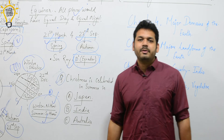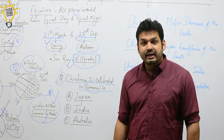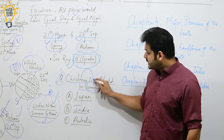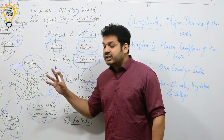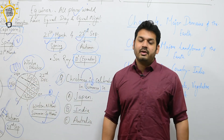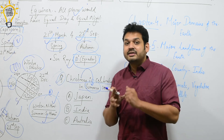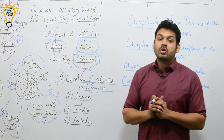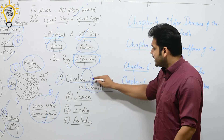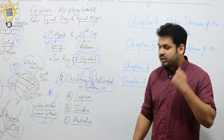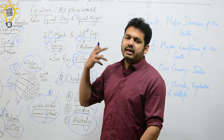There is a question in NCERT Class 6: Christmas is celebrated in December — is it summer or winter when Christmas is celebrated? Remember, on 22nd December the sun is over the Tropic of Capricorn. For the Southern Hemisphere, this means summer. So Australia, which is in the Southern Hemisphere, will have summer during Christmas. India and Japan, in the Northern Hemisphere, will have winter. The answer is: Christmas is summer in Australia and winter in India.